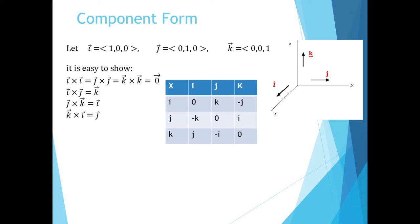If we return to our component form, it's easy to show using our definition that i cross j equals k, j cross k equals i, and k cross i equals j. And this is clearly consistent with the right hand rule. We also already showed that i cross i equals j cross j equals k cross k equals 0. Along with our anti-commutativity property, we can create the table shown here for i, j, and k. Because the distributive property holds for the cross product, we can actually just work directly with vectors in their component forms, though generally this is more tedious.